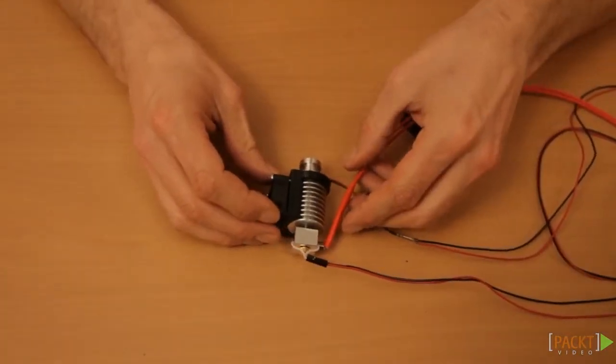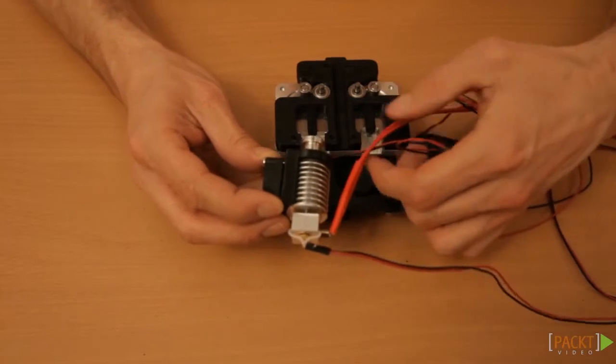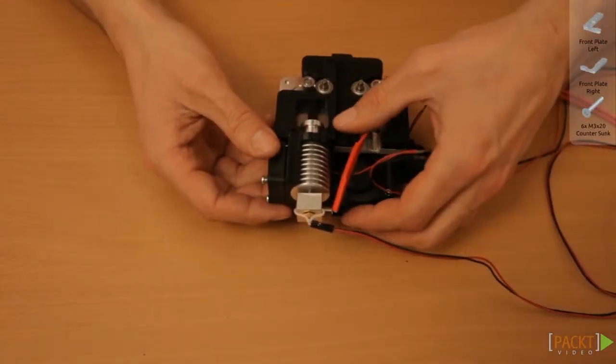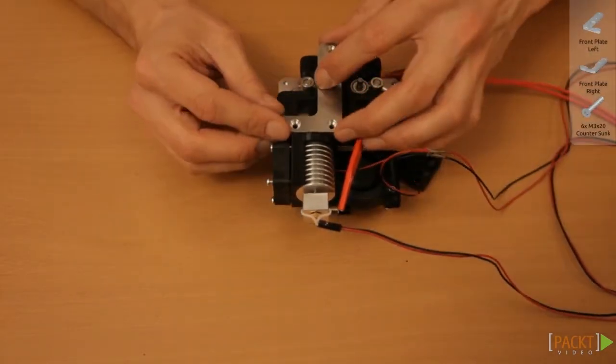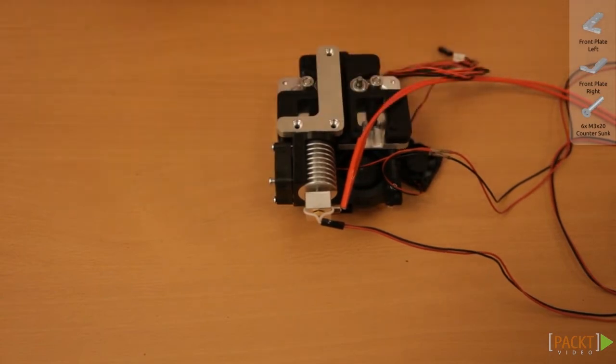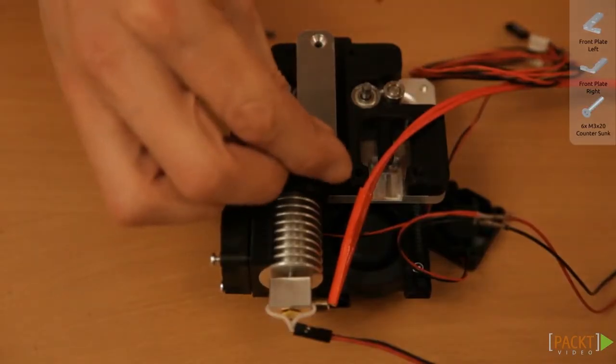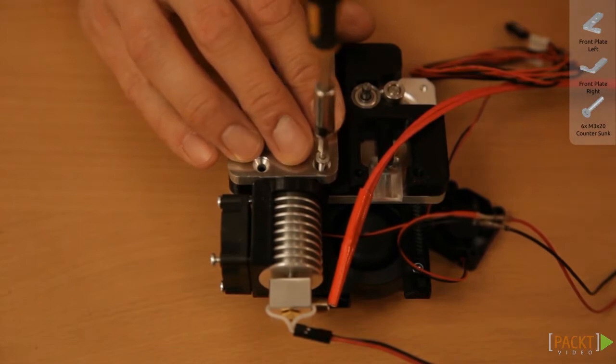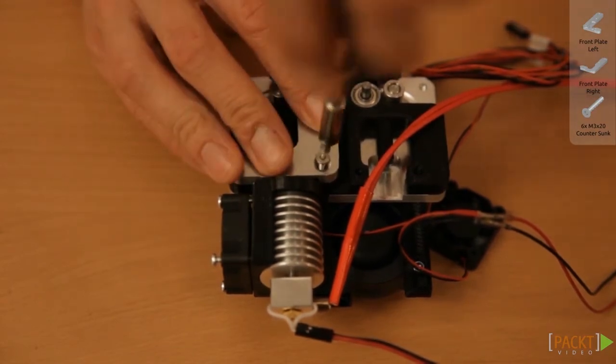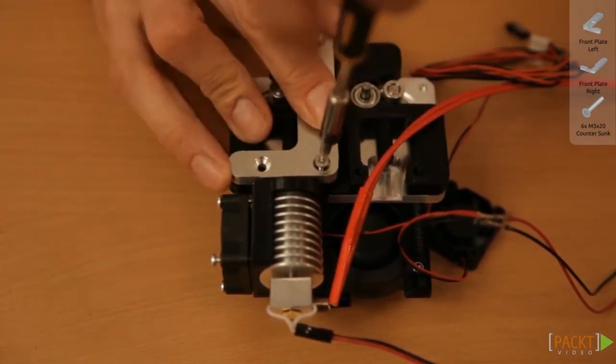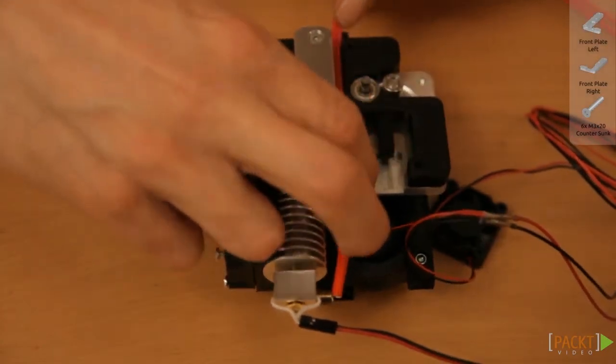Place the hot end into the base plate and the heat cartridge at the back. Cover the assembly with the aluminium front plate and fix the M3 x 20 countersunk screws. Lead the cables through the channel in the middle.